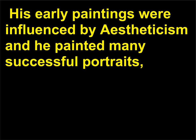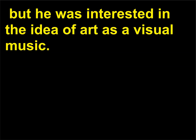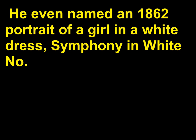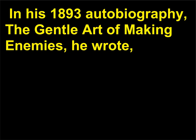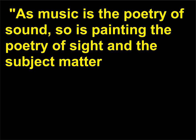His early paintings were influenced by aestheticism and he painted many successful portraits, but he was interested in the idea of art as a visual music. He even named an 1862 portrait of a girl in a white dress Symphony in White No. 1, to emphasize the musicality of his work. In his 1893 autobiography The Gentle Art of Making Enemies, he wrote: as music is the poetry of sound, so is painting the poetry of sight and the subject matter has nothing to do with harmony of sound or of color.